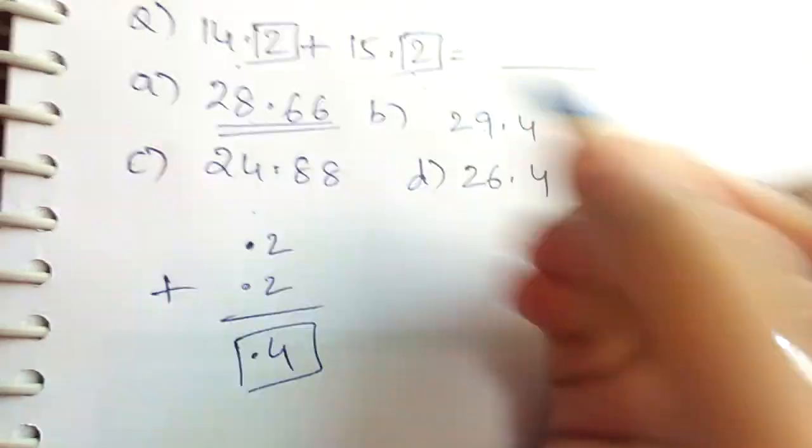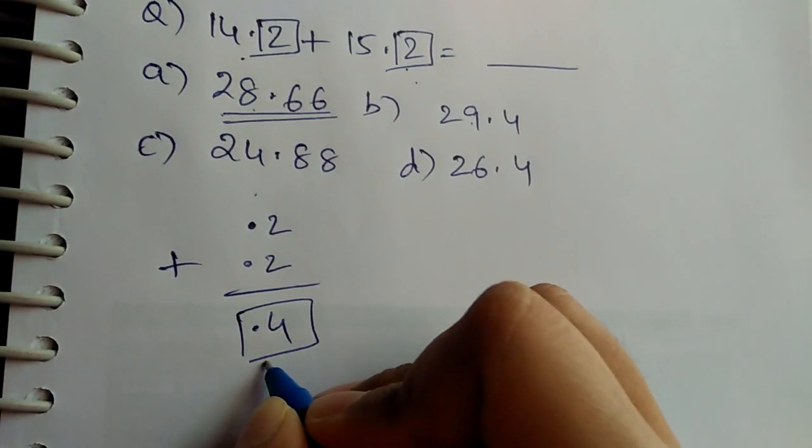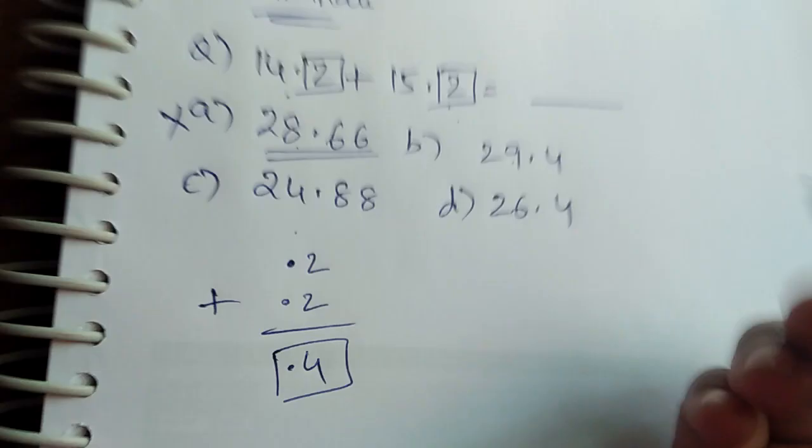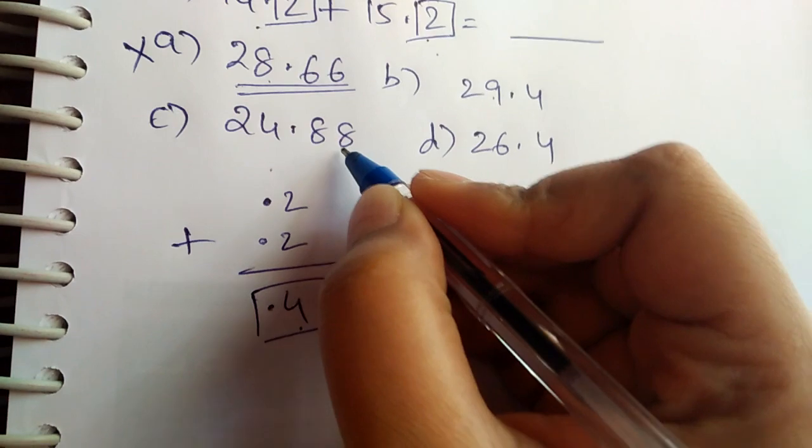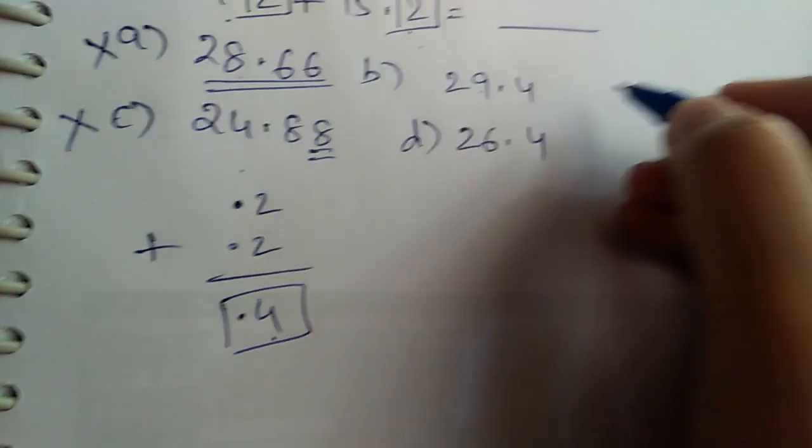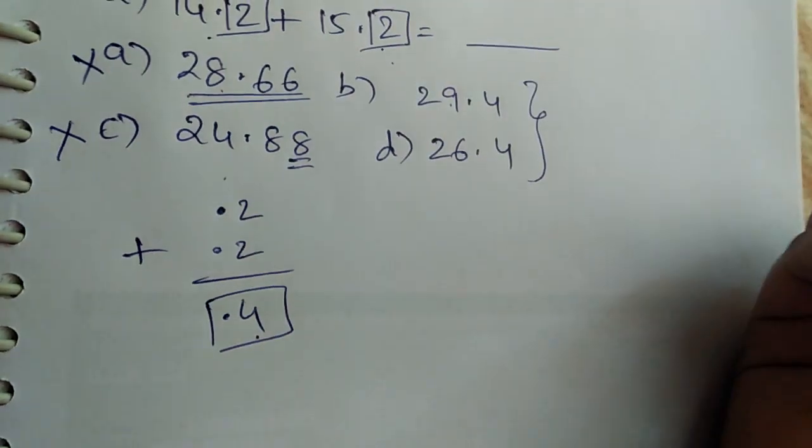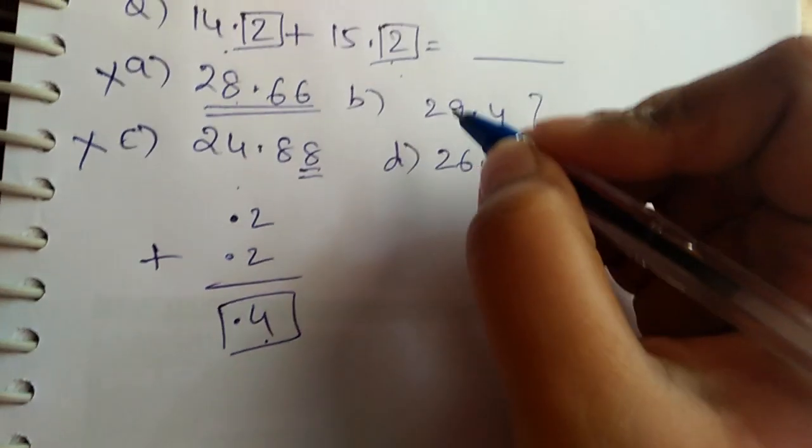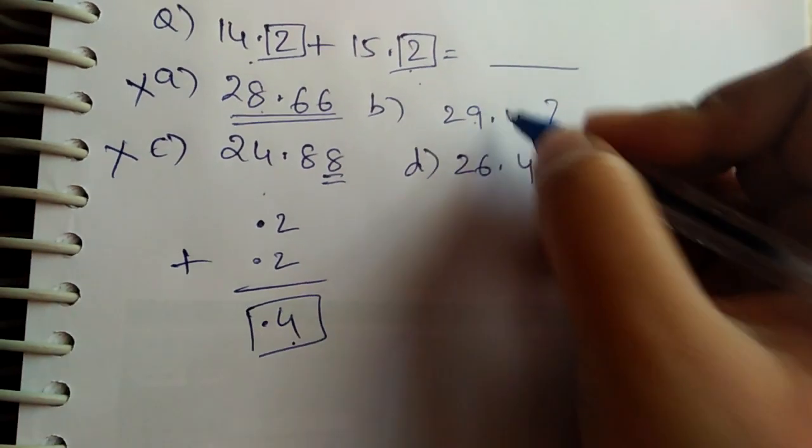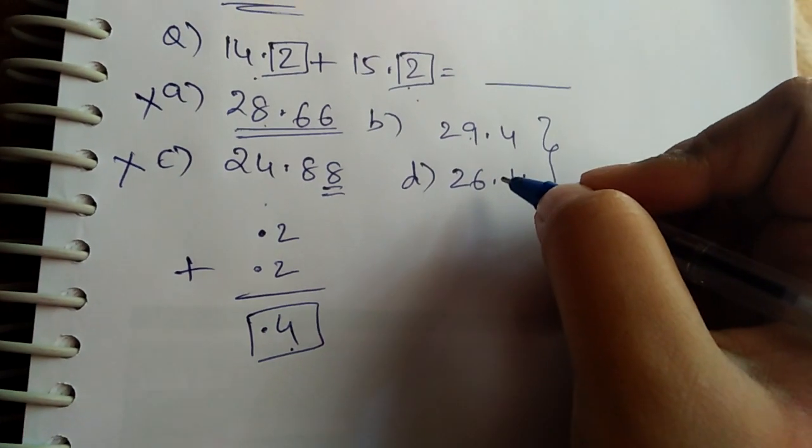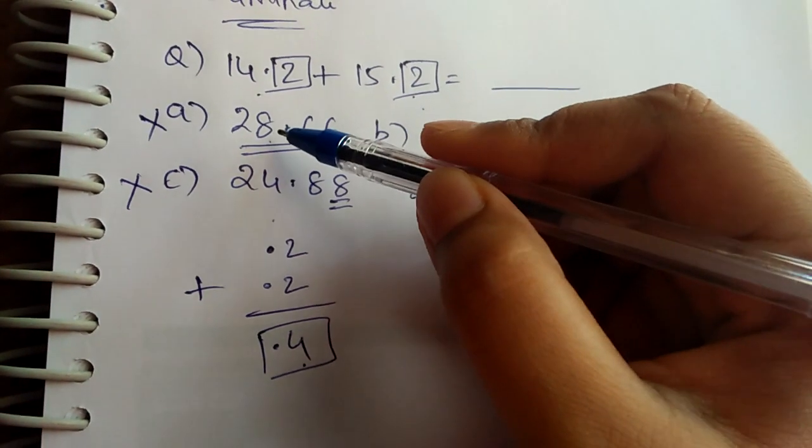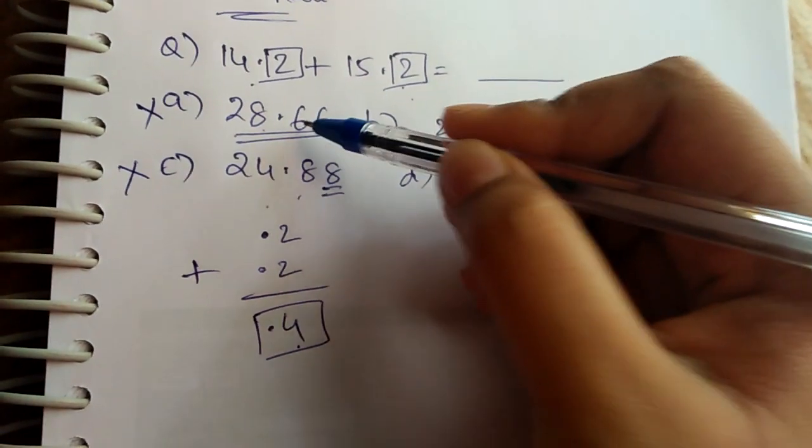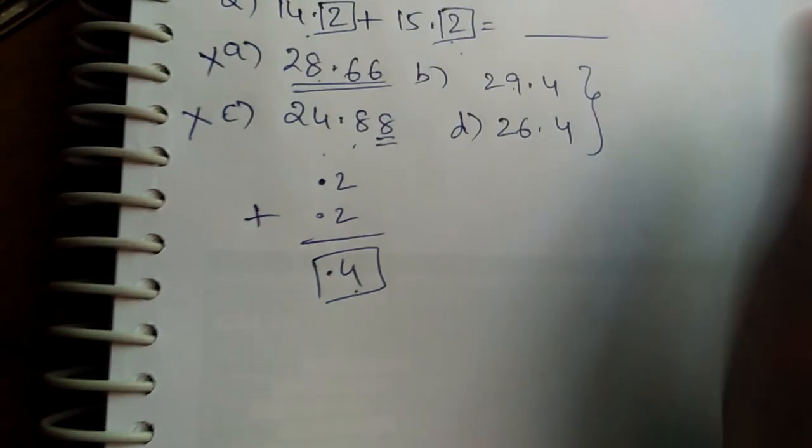Option A does not have .4 as its last decimal, so we can eliminate it. Option C also does not have .4 as the last digit, so we can eliminate this too. Only these two options are left, and one of the correct answers will be out of B and D options. This is called the elimination method.